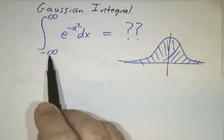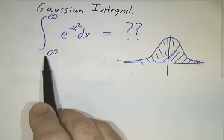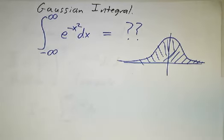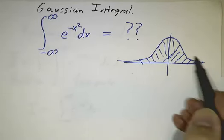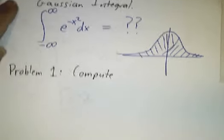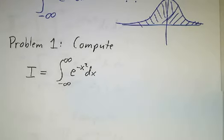And this time we're going to do the definite integral from -∞ to ∞ of e^(-x²)dx. So it's the area under this bell-shaped curve all the way from negative infinity to infinity. So that's our first problem: compute that integral.